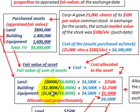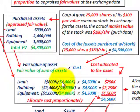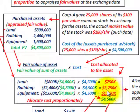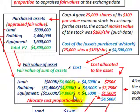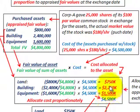We do the same for building and equipment — taking the appraised value of each, dividing by the total appraised fair value of $4,800,000, and multiplying by the total cost. This gives us a total allocated cost for each asset. When you add up the allocated amounts for land, building, and equipment, they total $4,500,000 — the same as the cost based on the stock issued.